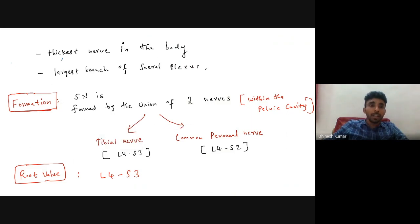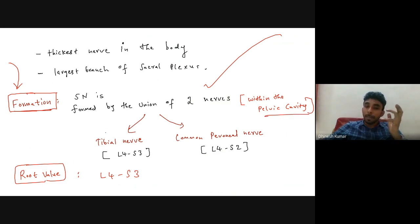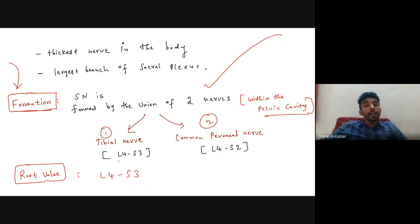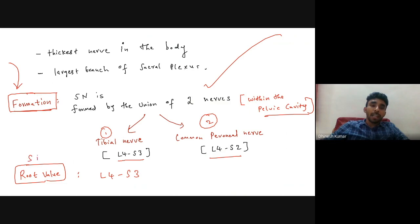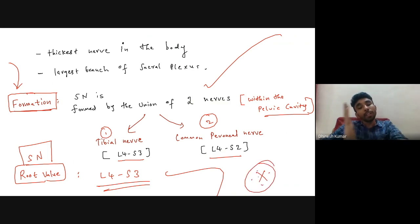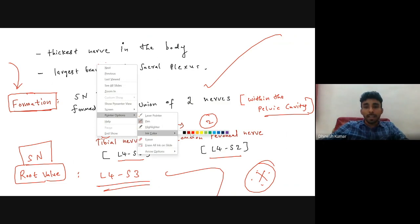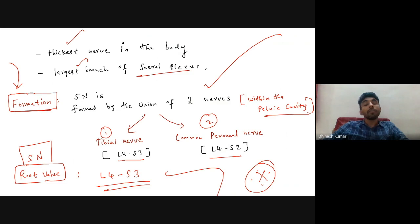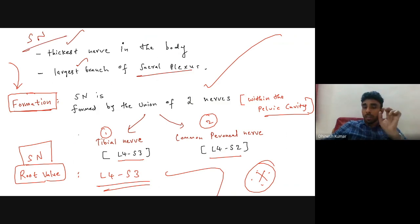The formation or origin of the sciatic nerve: it is formed by the union of two nerves within the pelvic cavity — the TBL nerve and the common peroneal nerve. The root value of the TBL nerve is L4 to S3, and the common peroneal nerve is L4 to S2. Therefore, the sciatic nerve root value is L4 to S3. It is the thickest nerve in the body and the largest branch of the sacral plexus.